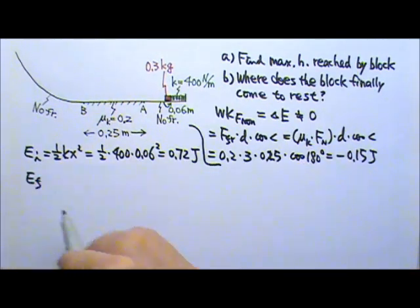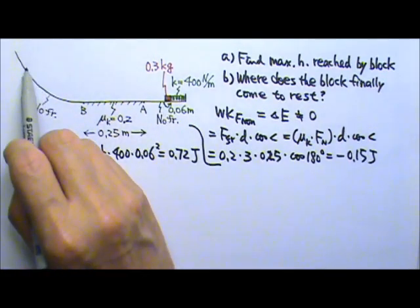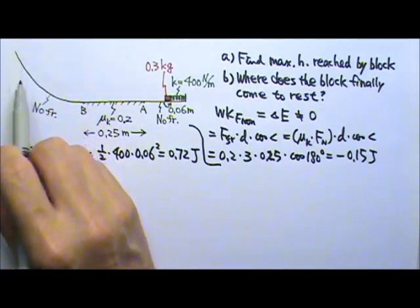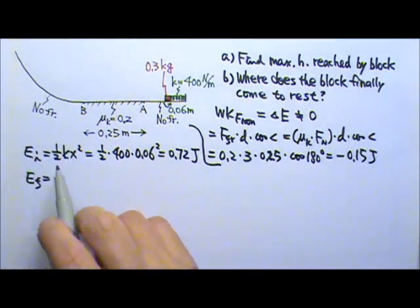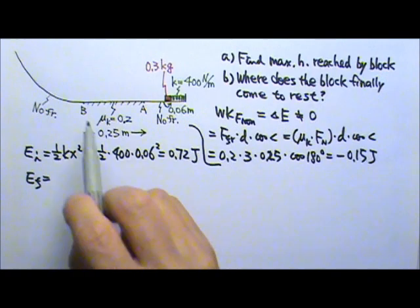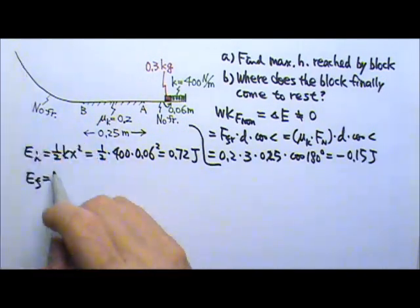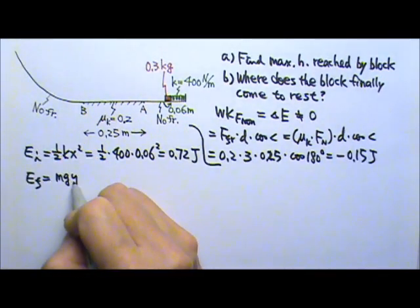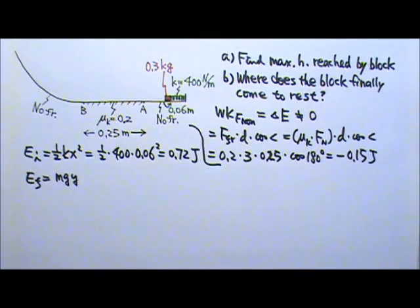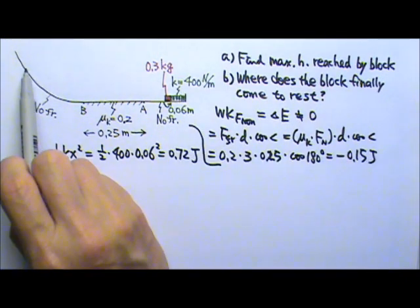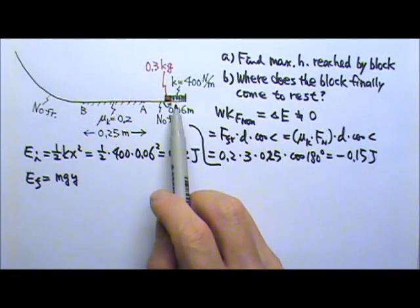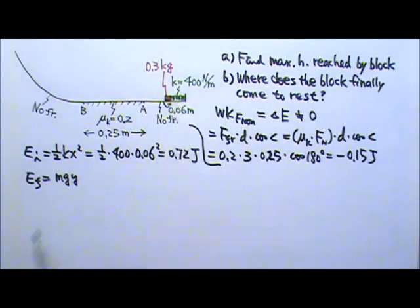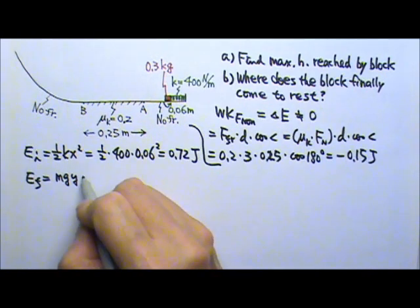Final, when the block is at maximum height over here, since it's maximum height, that means it's a turning point, no speed. Kinetic energy is zero. Up high, so it's going to have mgy. In fact, we're looking for the y, the height. When the block is at the maximum height, the spring would be relaxed, so no more energy in the spring. So mgy, that's all.